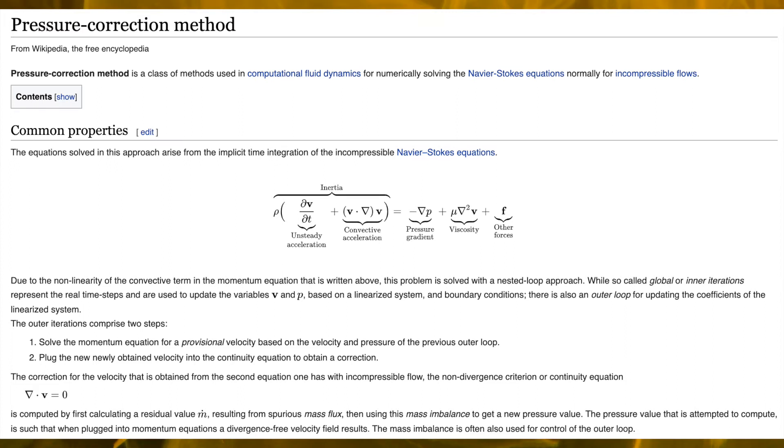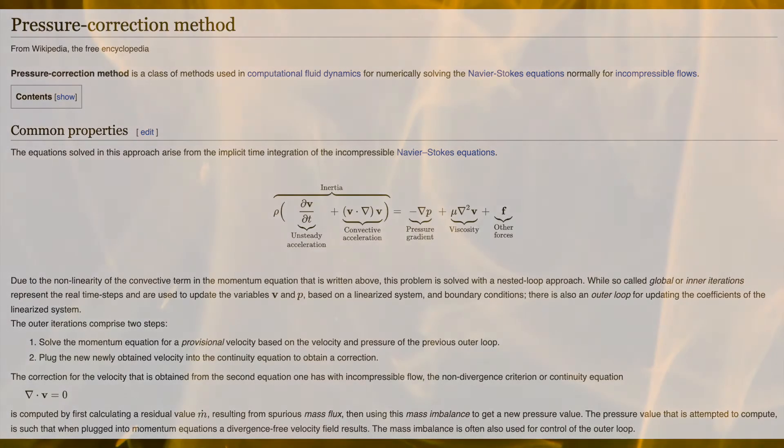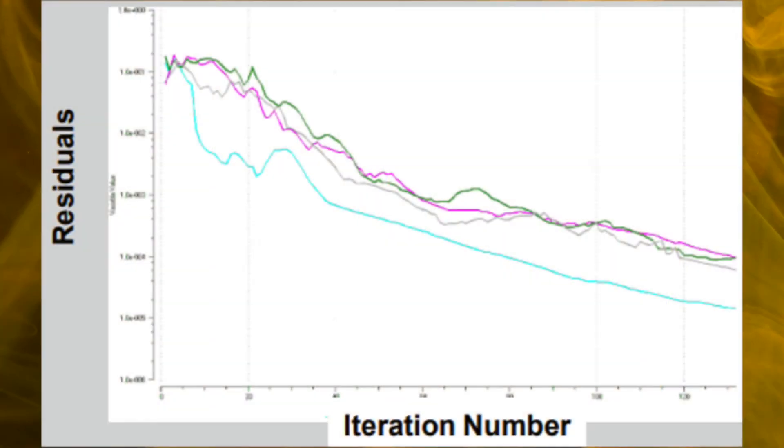Since the governing equations are non-linear and coupled to each other, to reach a solution the process needs iterations where the entire set of governing equations is solved repeatedly until the solution converges.